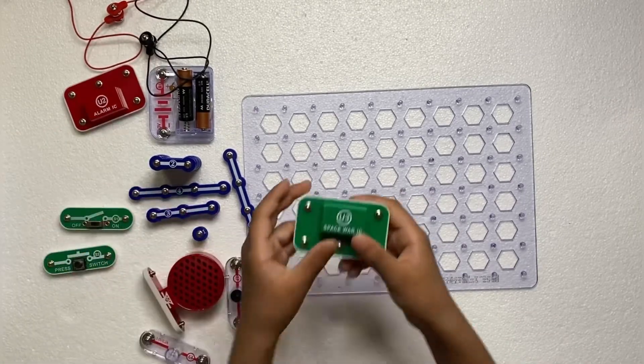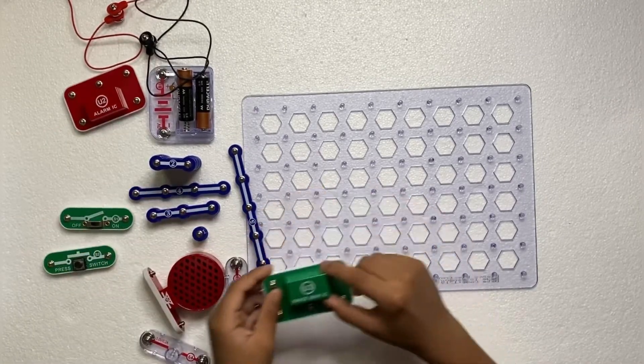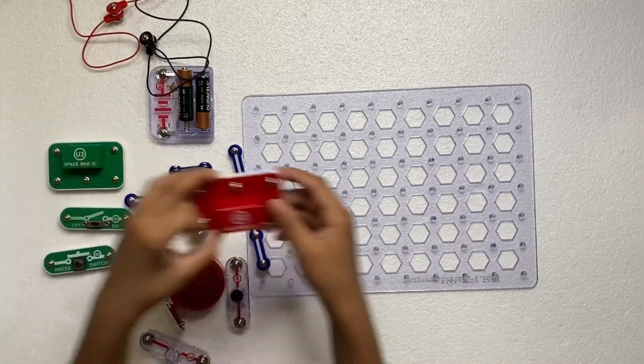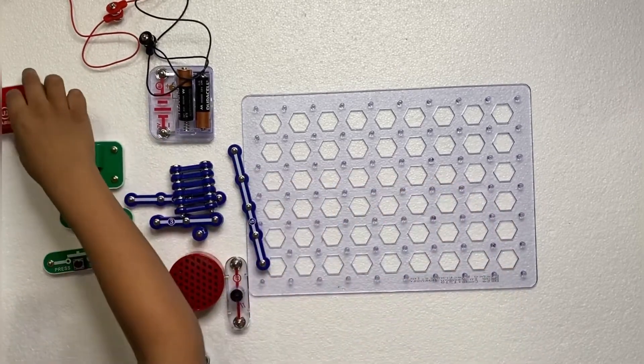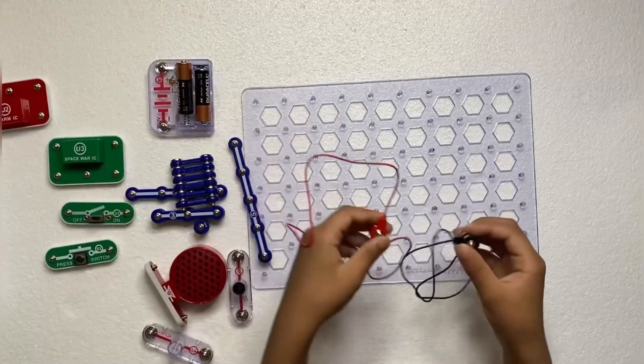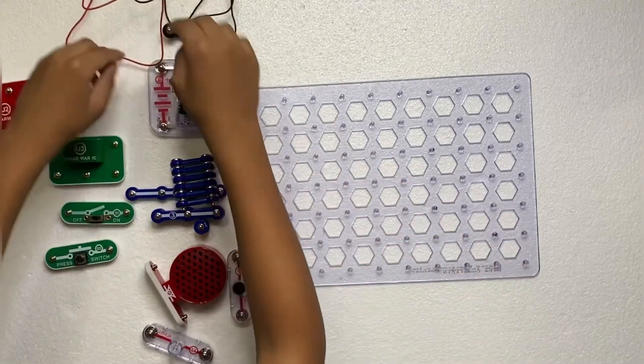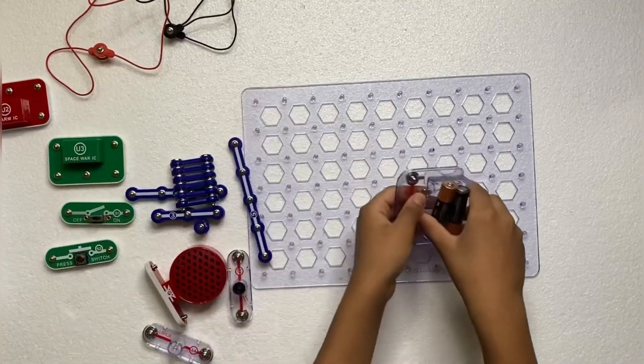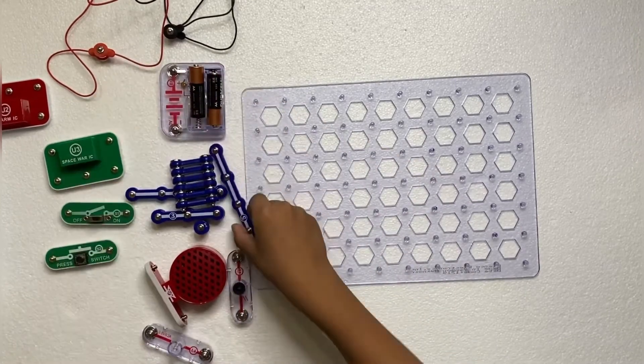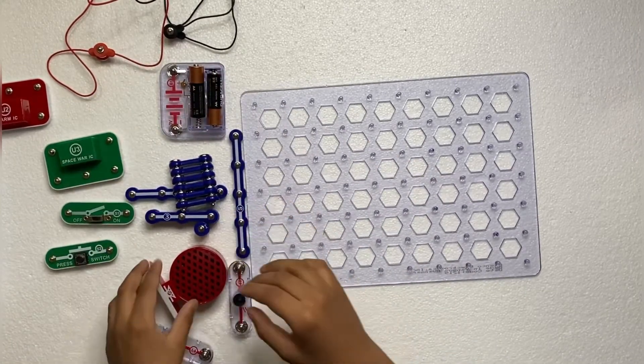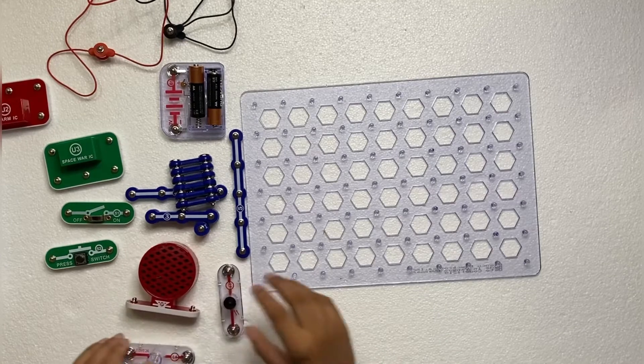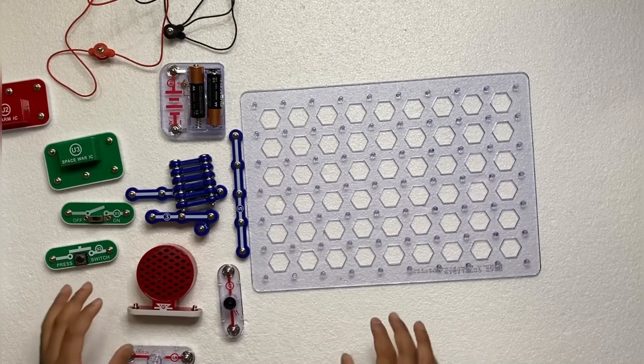Space war integrated circuit or IC, alarm integrated circuit or IC, two jumper wires red and black, battery holder with battery. That's all. It's a lot of stuff to take out, so pause the video and get out all the stuff.